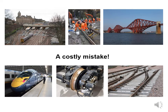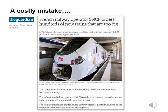Now we're going to have a short look at a very costly mistake associated with structure gauging. Back in 2014, the Guardian newspaper reported that French railway operator SNCF had ordered hundreds of new trains that were too big. The national rail operator SNCF ordered 2000 new trains that were too large for many of the stations they were due to serve. The train operator admitted failing to verify the measurements it was given by the rail operator before ordering its new rolling stock — a very, very expensive mistake.